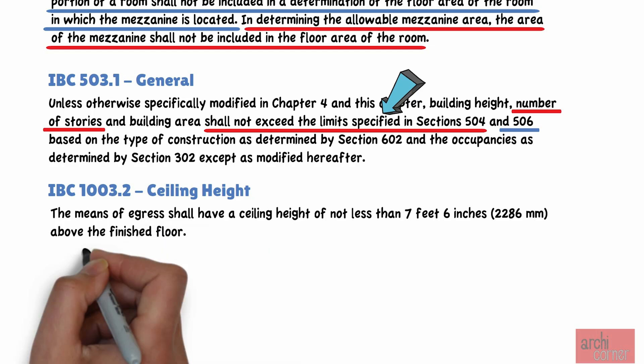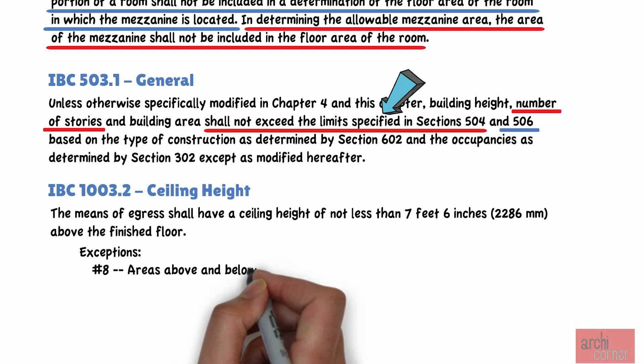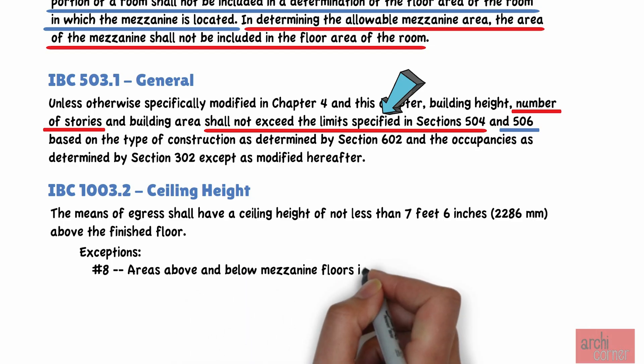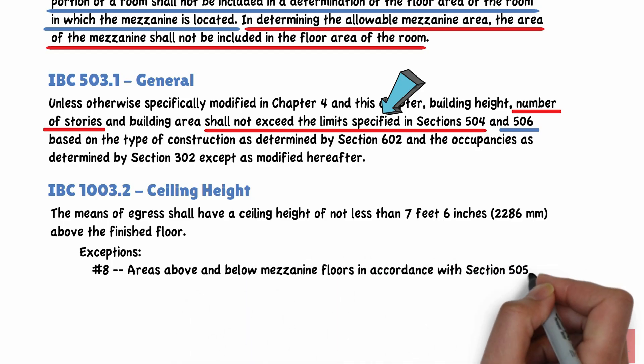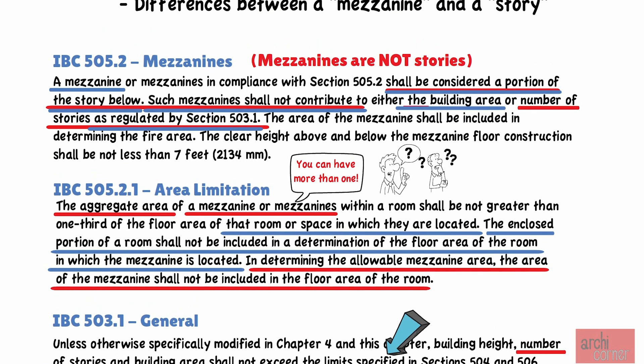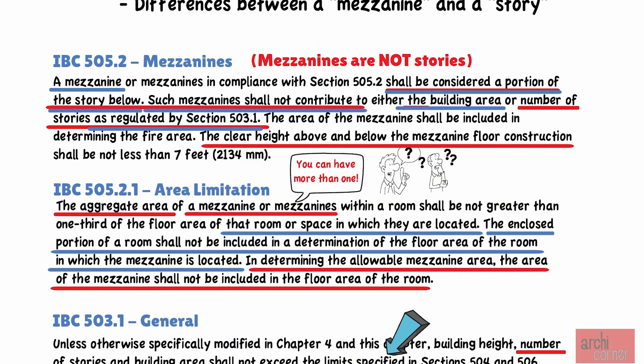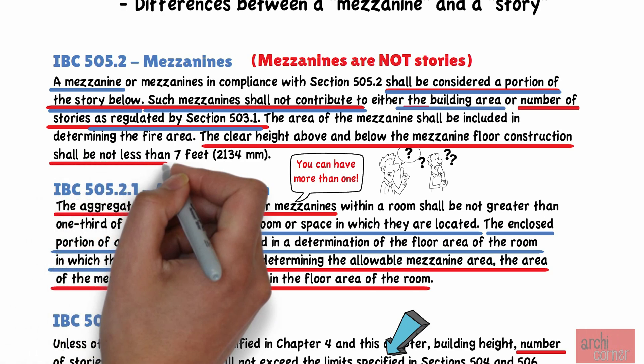If we first look at IBC section 1003.2, ceiling height, this code states that the means of egress shall have a height of not less than seven feet six inches above the finished floor. However, there is exception number eight, which states that areas above and below mezzanine floors can comply with section 505.2. And guess what? We've already looked at section 505.2. But looking at section 505.2 again, it states that the clear height above and below the mezzanine floor construction shall be not less than seven feet.